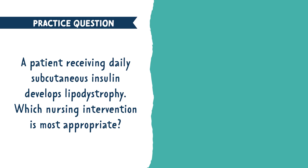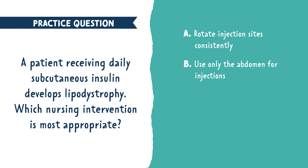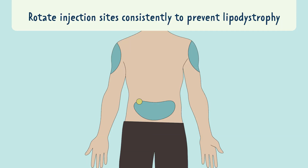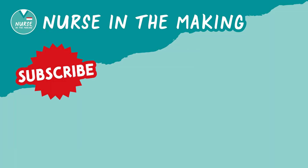One more NCLEX style question. A patient receiving daily subcutaneous insulin develops lipodystrophy — which nursing intervention is most appropriate? A. Rotate the injection sites consistently. B. Use only the abdomen for injections. C. Massage the site after each injection. D. Use longer needles for deeper penetration. The correct answer is A. Lipodystrophy occurs when the same site is used repeatedly and the tissue becomes unhealthy. It's always important to educate your patient to rotate the injection sites. Happy studying, future nurses.